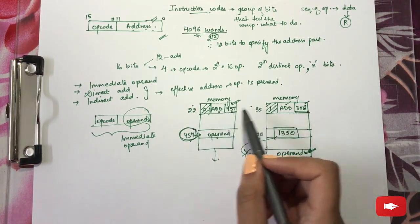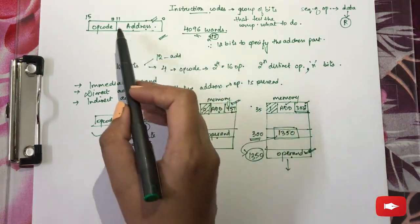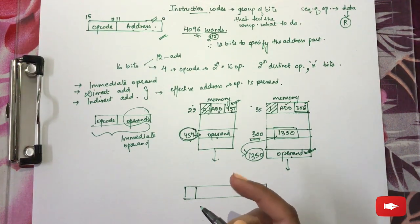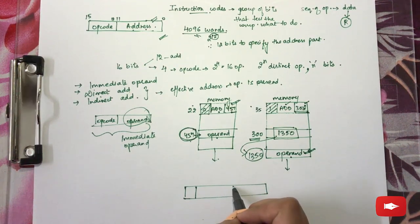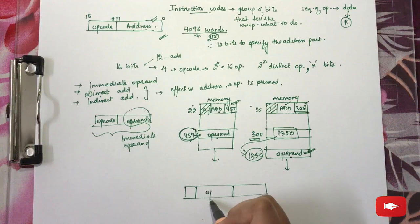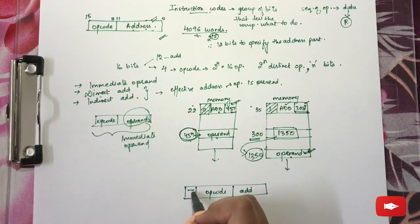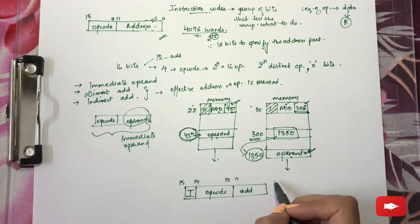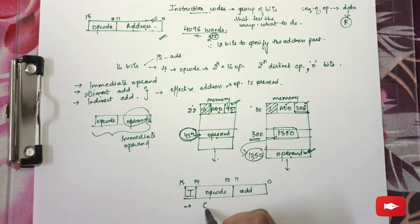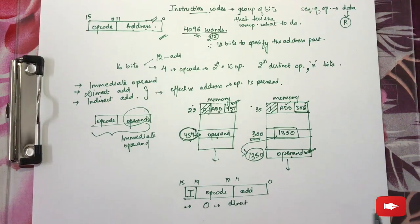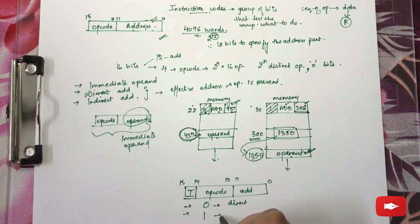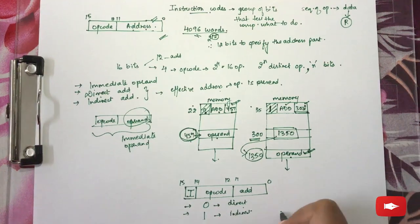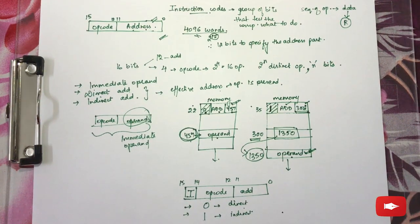To differentiate between direct and indirect addressing in the instruction format, we save a single bit called the I-bit. If the value of I is 0, it indicates direct addressing. If the value of I is 1, it indicates indirect addressing. That was all about instruction codes.